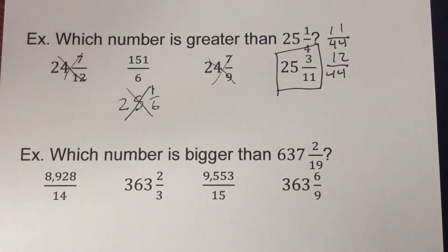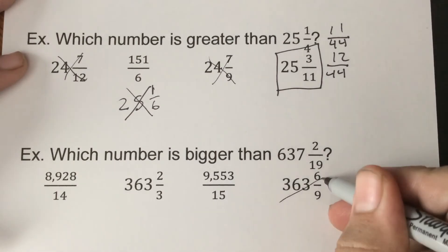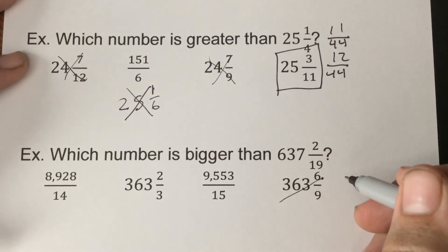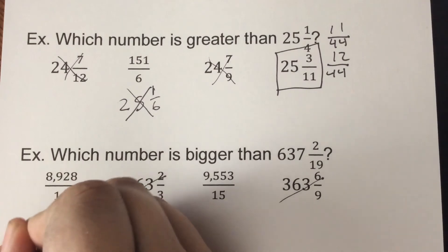Now last problem here. Which number is bigger than 637 and 2/19? So again, if we're not bigger than 637, we're for sure not going to be bigger than our fraction. So the 636 or 363 is out. Now I'm going to put these in my calculator because these are bigger numbers and I'm going to try to speed this up.